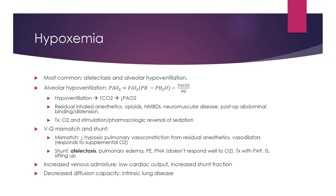Increased venous admixture is more common in low cardiac output states. Normally only 2–5% of cardiac output is shunted through the lungs, but in low output states with possible atelectasis, the shunt fraction can increase, and the severely deoxygenated blood returning to the heart can drop mixed arterial PaO2. Additionally, pre-existing decreased diffusion capacity from intrinsic lung disease can also impact postoperative oxygen levels.